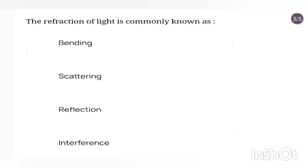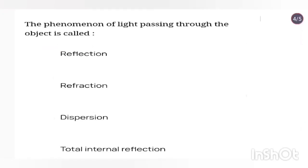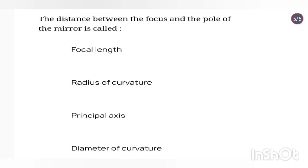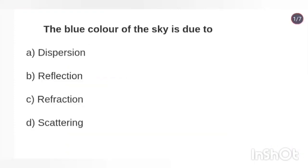The reflection of light is commonly known as bending. The phenomenon of light passing through the object is called refraction. The distance between the focus and the pole of the mirror is called focal length. The blue color of the sky is due to scattering.